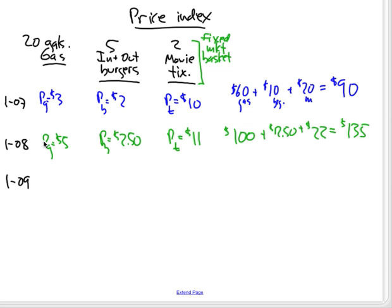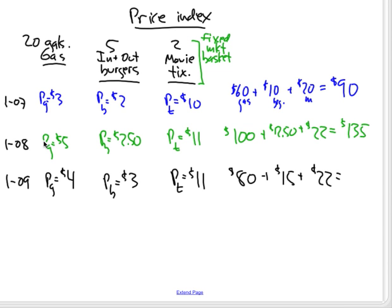Now in 09, gas has come back down again to four dollars, burgers have gone up to three, and tickets have stayed at eleven. How much does it cost you now? You'll spend eighty dollars on gas, five times three, fifteen on burgers, and still 22 at the movies, for a total of 117.